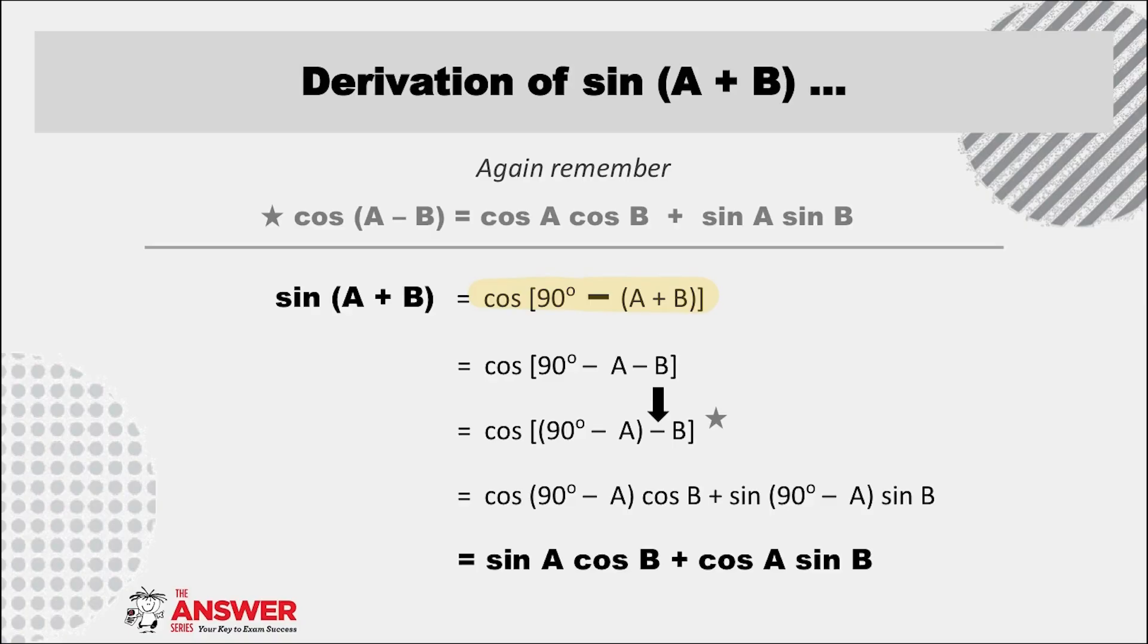Getting your brackets correct here is crucial, otherwise the signs are going to get all mixed up. Multiply out the brackets inside and then rearrange the brackets so that you get cos of the difference of (90° - A) and B.